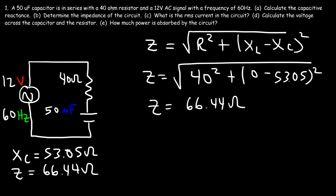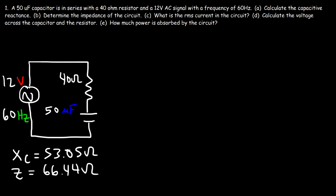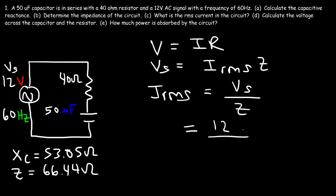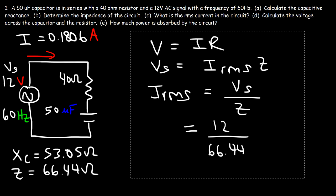Part C: what is the RMS current in the circuit? Using V equals IR, the source voltage Vs equals the RMS current times the impedance. So the RMS current is the source voltage divided by the impedance — 12 volts divided by 66.44 ohms — giving a current of 0.1806 amps.